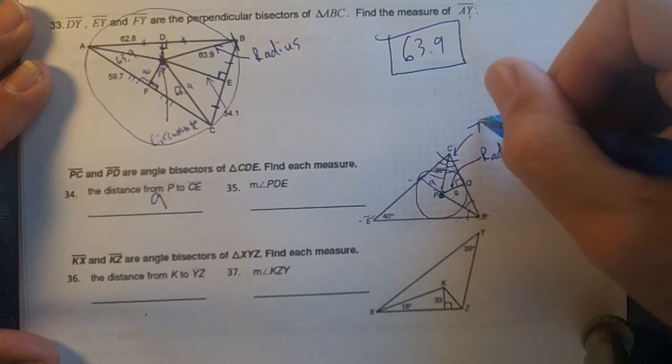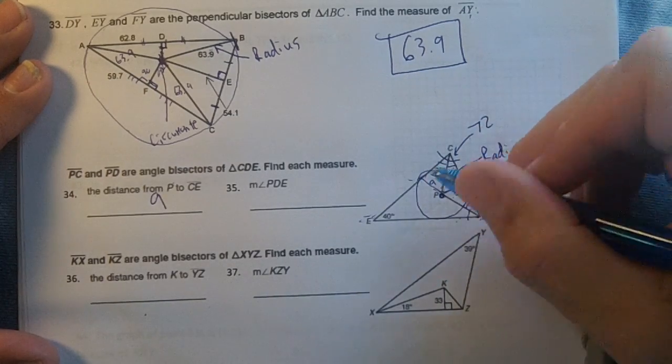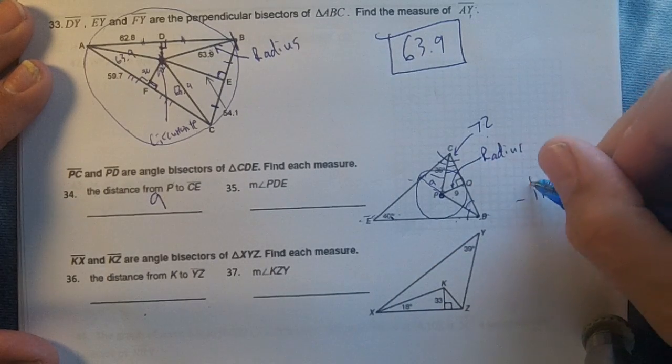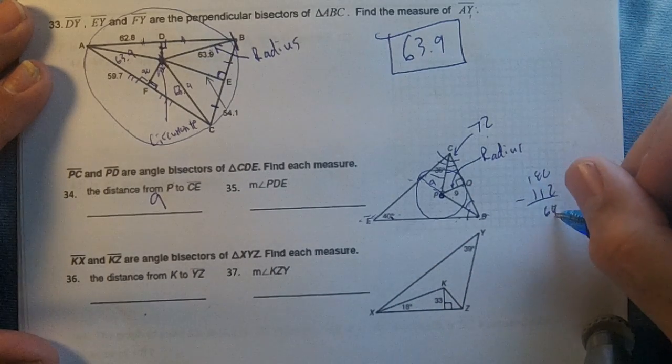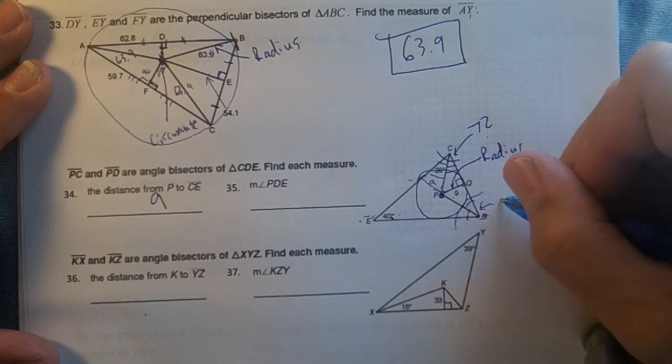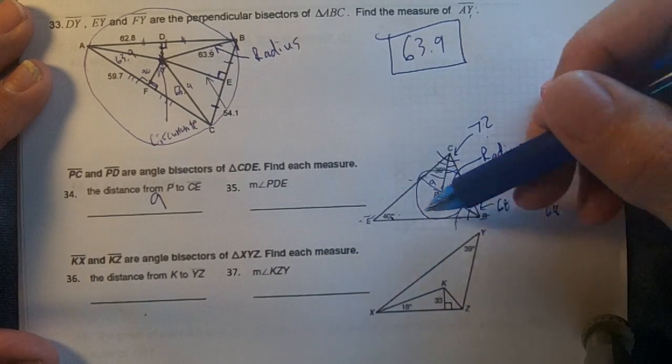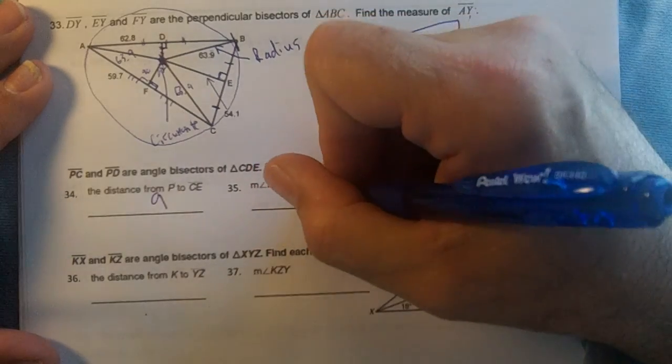This whole angle right here is 72. So 40 and 72 is 112, minus 180 you would get 68. This whole angle right here would be 68, and we want PDE. Half of 68 would be 34.